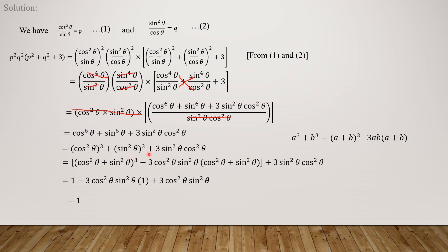We apply the algebraic identity: a³+b³ = (a+b)³ − 3ab(a+b). Here a = cos²θ and b = sin²θ. So we substitute: (cos²θ + sin²θ)³ − 3sin²θcos²θ × (cos²θ + sin²θ), plus 3sin²θcos²θ.